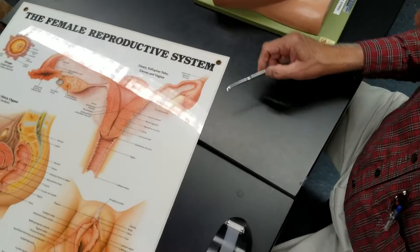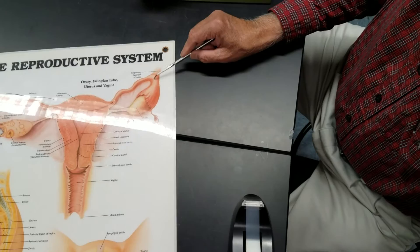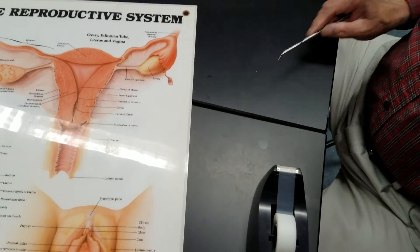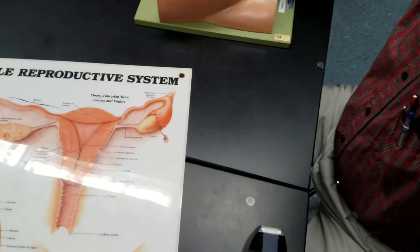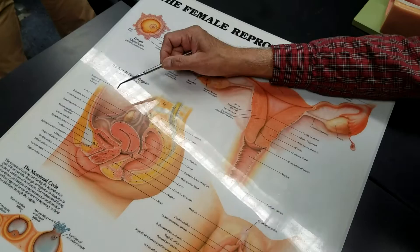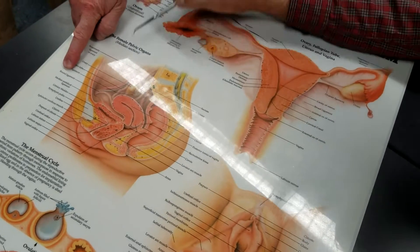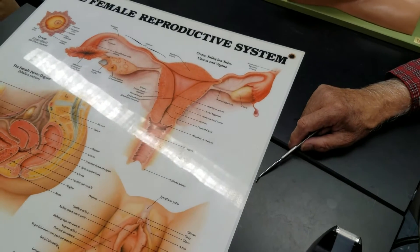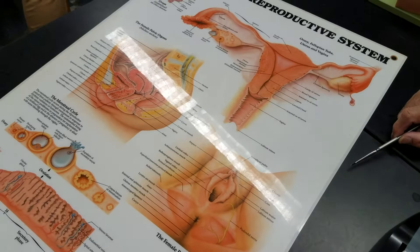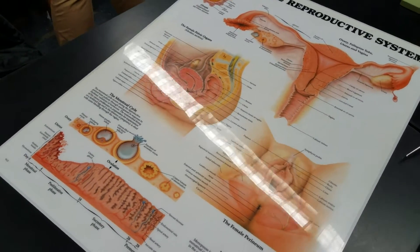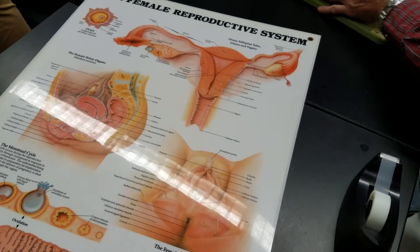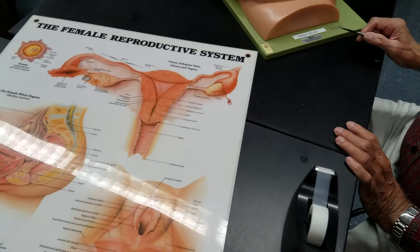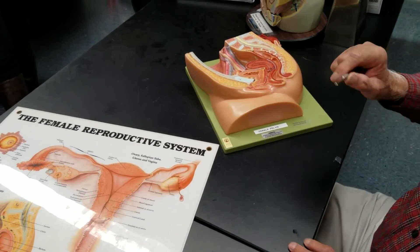This is the suspensory ligament. This is the fallopian tube, these are fimbriae, this is the ovary, this is the ovarian ligament, and this is the broad ligament. You can also see the round ligament here in the back. Posteriorly, you can see the structures here. Any questions? Make sure you go through all of these.